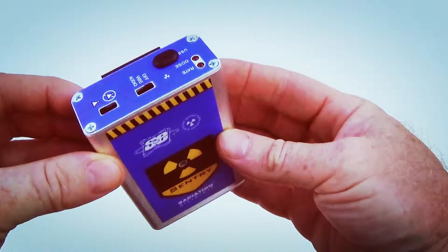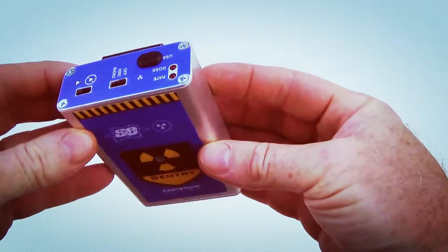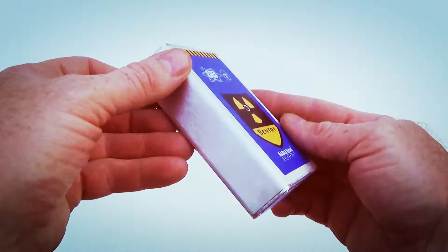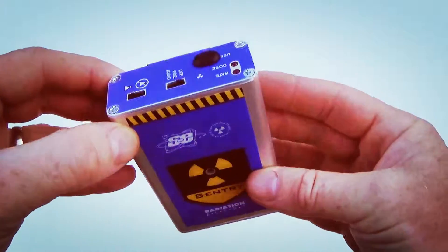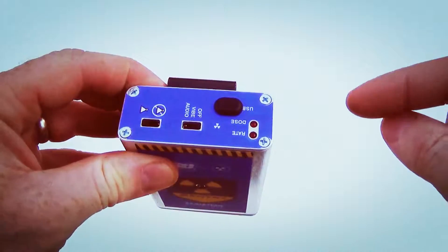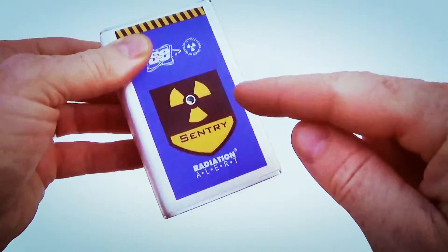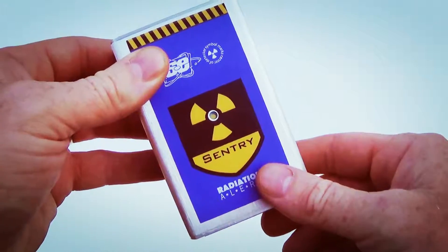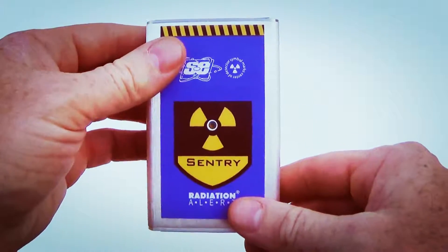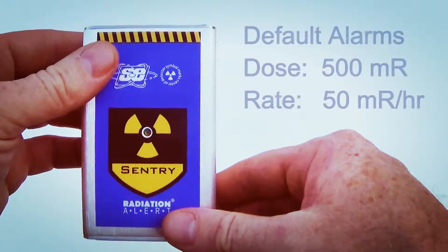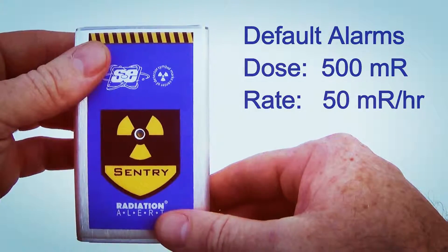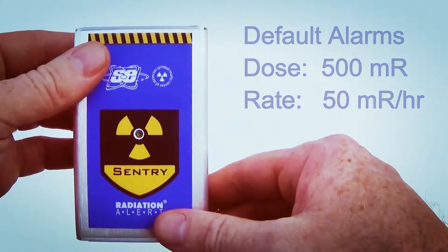The Sentry works as a standalone unit or in conjunction with the optional Sentrycom software, which can assist in tracking exposure to generate incident reconstruction for analysis. The Sentry EC employs two bright pulsating LEDs, an audio alert, and a vibration alert for the selected alert levels. The default dose alarm is 500 MR, and the default rate alarm is 50 MR per hour.